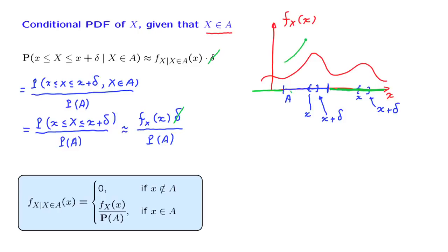In terms of a picture, we might have something like this — this green diagram is the form of the conditional PDF. The particular factor in the denominator is exactly the scaling factor required so that the total area under the green curve, under the conditional PDF, is equal to 1.